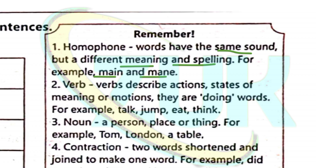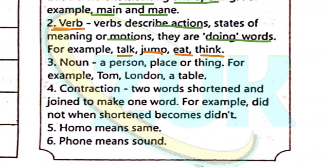A verb describes an action — it describes straight movement or motion. For example: walk, run, jump, eat, think. A noun is a person, place, or thing. For example: Tom, London, or table. The noun is the name of a person, place, or thing.